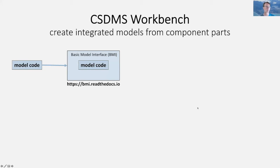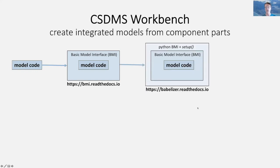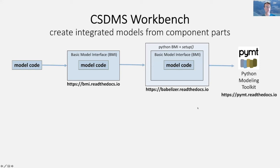The Basic Model Interface can be implemented in one of several different languages. Once you have provided a standard API, there is a set of tools that can be used to give that model a Python front end, meaning the model can be driven directly through Python and combined with other Python workflows. To make that process easier, CSDMS provides the Python modeling tool, which allows you to import particular models wrapped in Python, as well as various utilities.